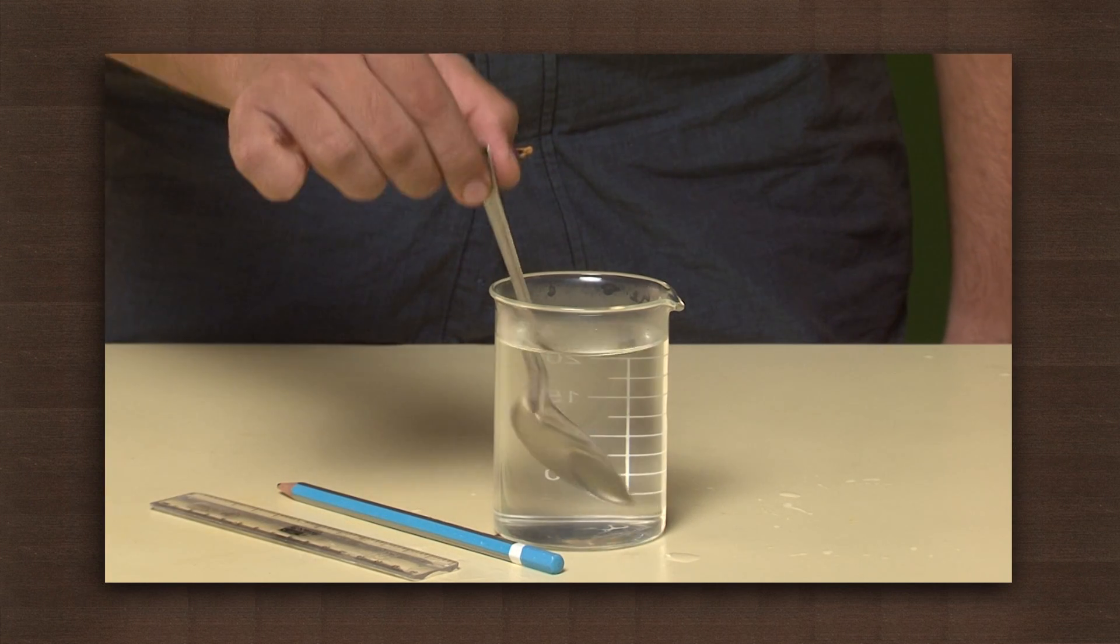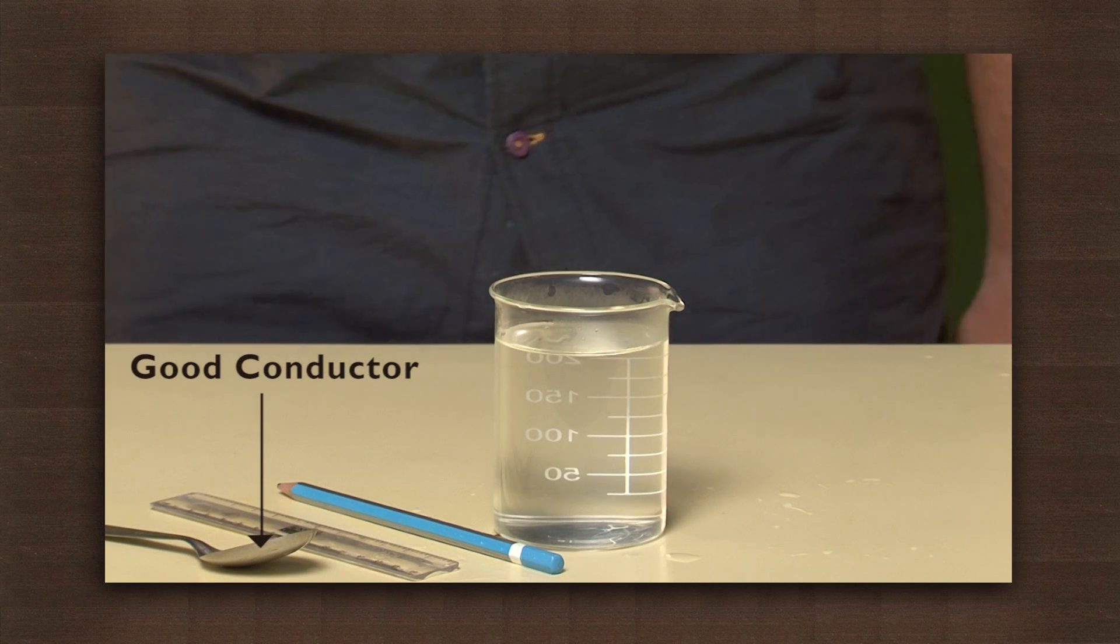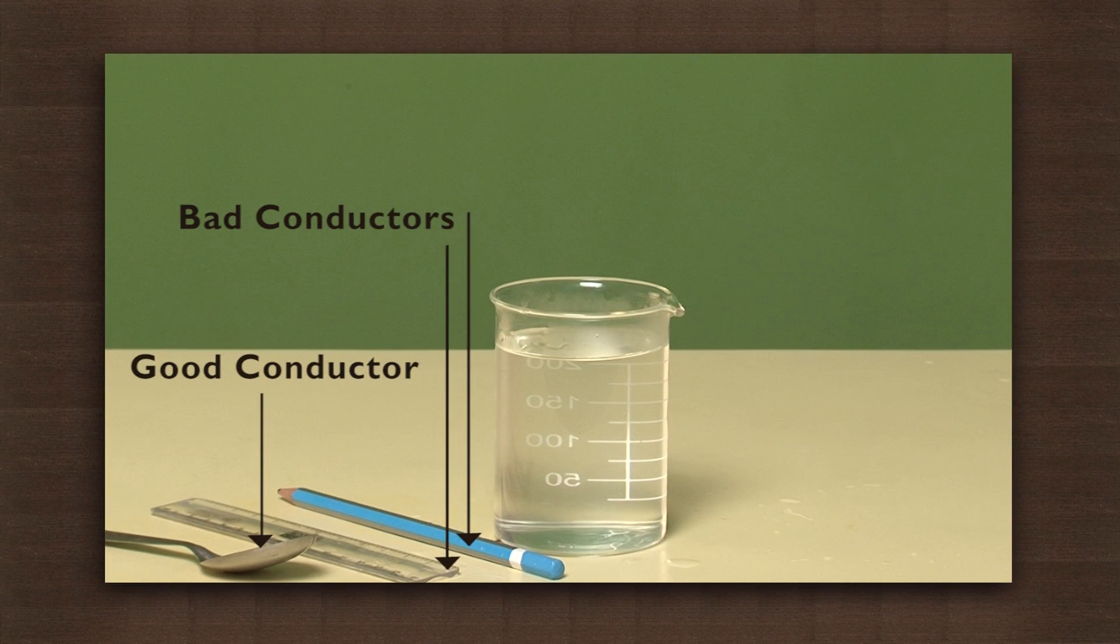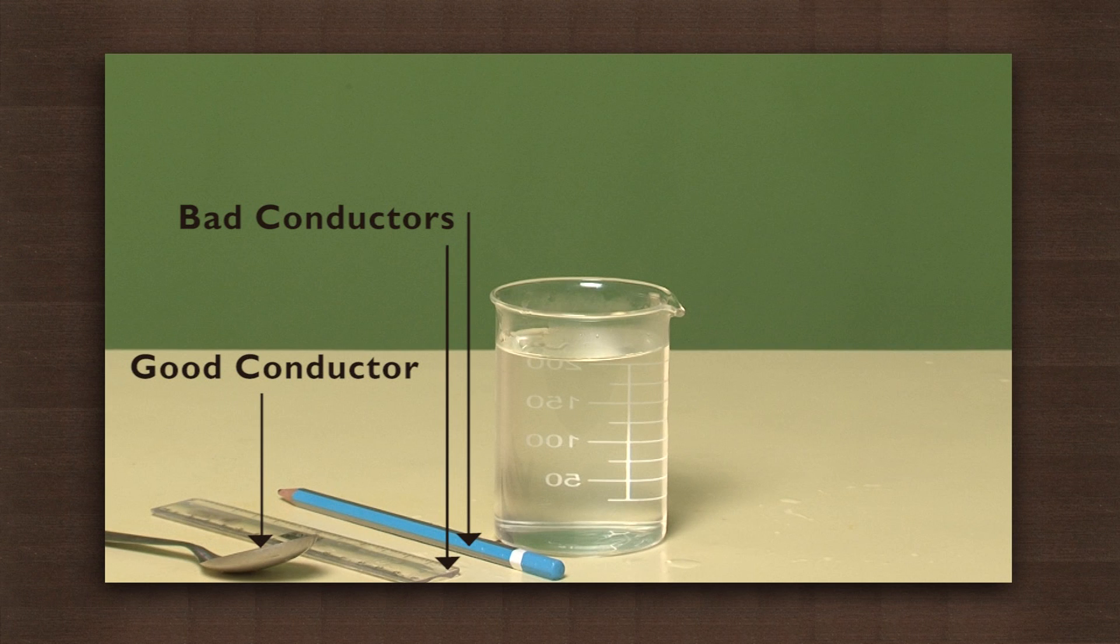The metal spoon could conduct heat to the top and hence is a good conductor of heat. The plastic scale and pencil could not conduct the heat to the top, hence they are bad conductors of heat.